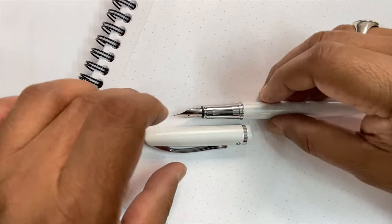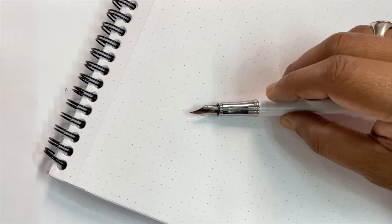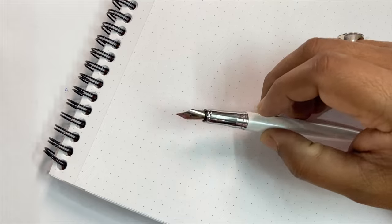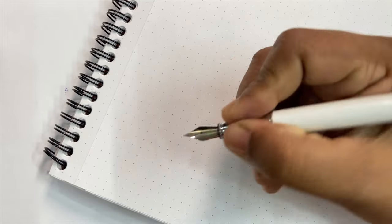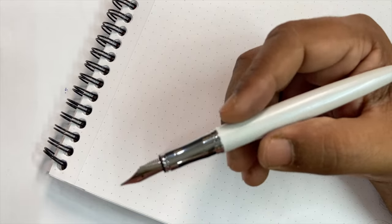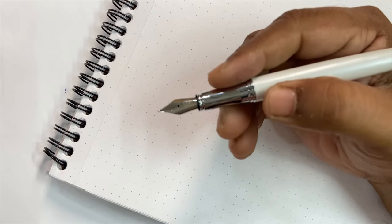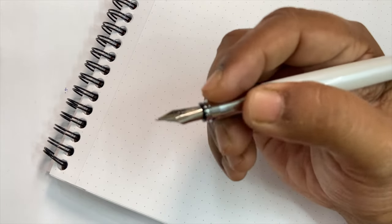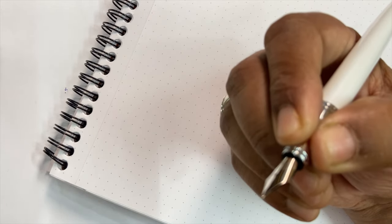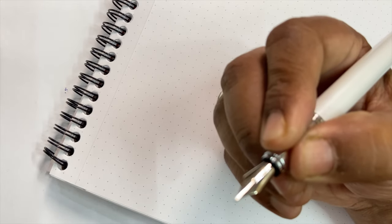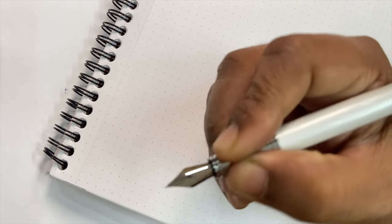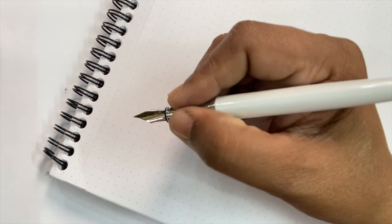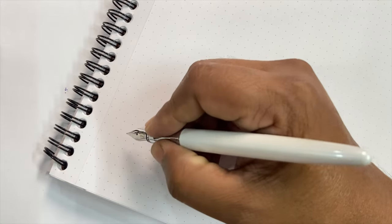I guess by this time the ink has traveled up to the nib and I'll now take a writing sample. The first thing that strikes me with regard to Pelican Jazz is this comfortable gripping section. The gripping section is fairly on the thinner side, which gives medium-sized fingers a perfect control of the pen in terms of grip.